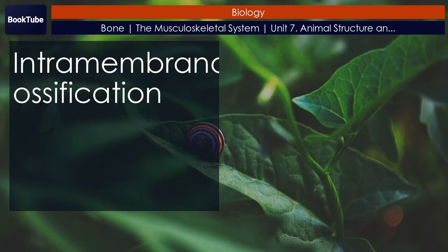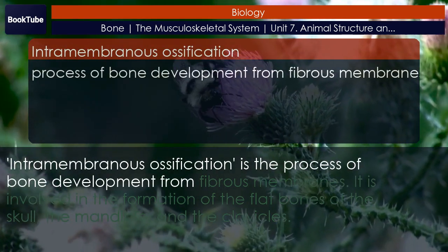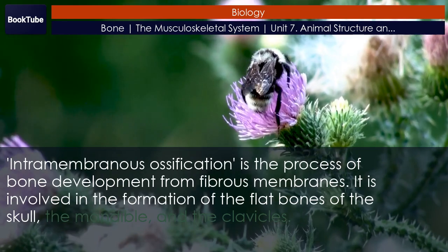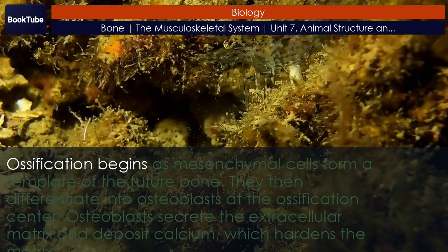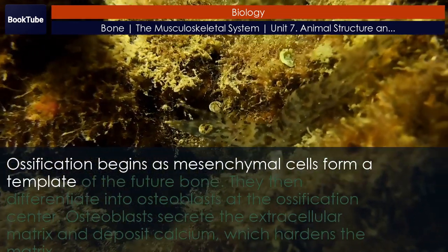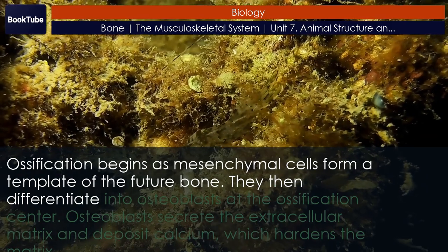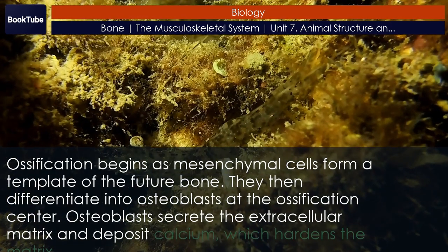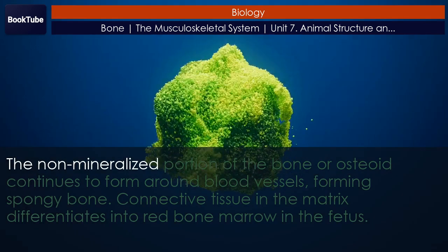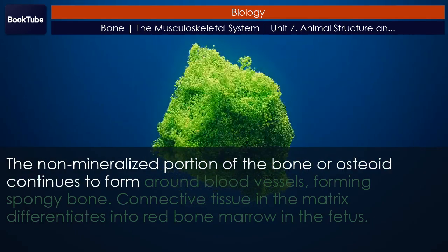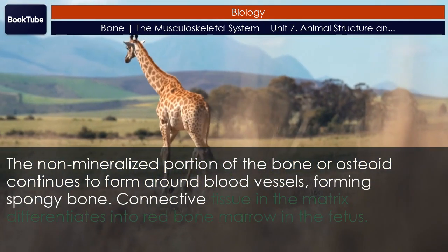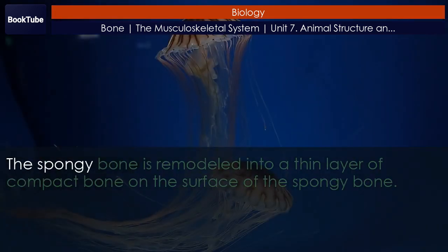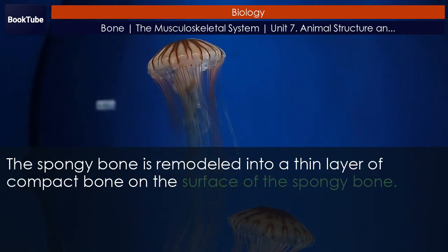Intramembranous ossification is the process of bone development from fibrous membranes. It is involved in the formation of the flat bones of the skull, the mandible, and the clavicles. Ossification begins as mesenchymal cells form a template of the future bone, then differentiate into osteoblasts at the ossification center. Osteoblasts secrete the extracellular matrix and deposit calcium, which hardens the matrix. The non-mineralized portion of the bone, or osteoid, continues to form around blood vessels, forming spongy bone. Connective tissue in the matrix differentiates into red bone marrow in the fetus. The spongy bone is then remodeled into a thin layer of compact bone on the surface.